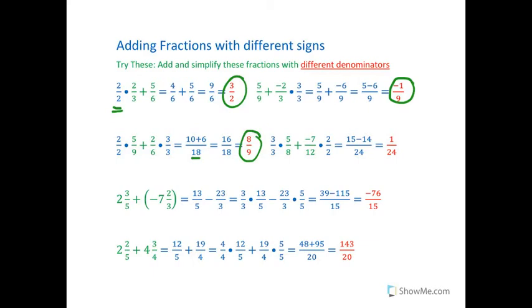We start with 5 eighths plus a negative 7 twelfths. Get a common denominator of 24. And so we end up with 3 times 5 is 15 and 2 times negative 7 is negative 14. 15 take away 14 is 1 over 24. Change your mixed numbers to improper fractions. So 2 times 5 is 10, 11, 12, 13 fifths. And 7 times 3 is 21 minus, we have 23 thirds and 13 minus, oh, we don't have the same denominator. I'm sorry, this is a real long problem here. So we're going to have to find out what it is. It's going to be 15. So to get 15, it's going to be 3 times 5 right here and this is going to be 5 times 3. And we end up with 39 minus 115, negative 76 over 15.